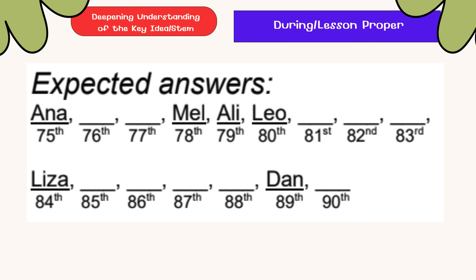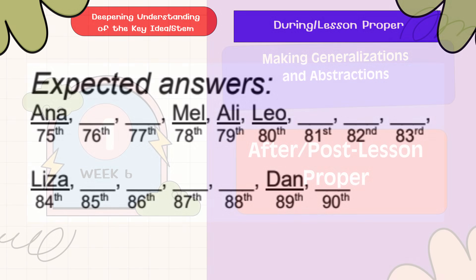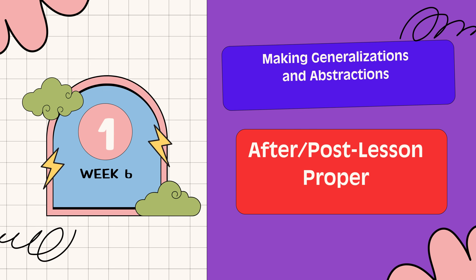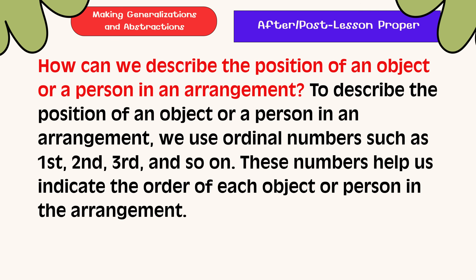Here are the expected answers. Great job, kids! Making generalization and abstraction: How can we describe the position of an object or a person in an arrangement? We use ordinal numbers such as first, second, third, and so on. These numbers help us indicate the order of each object or person in the arrangement.